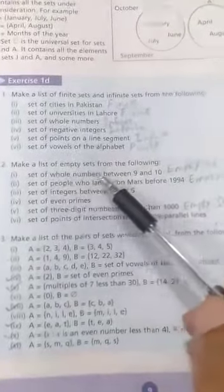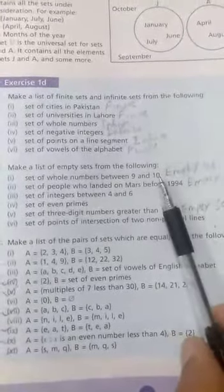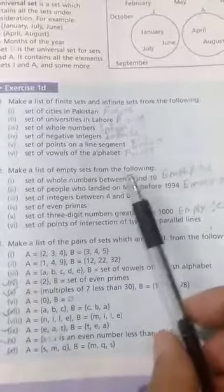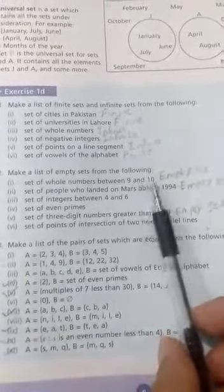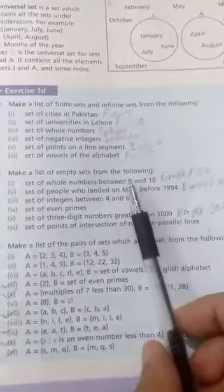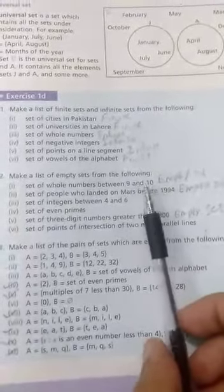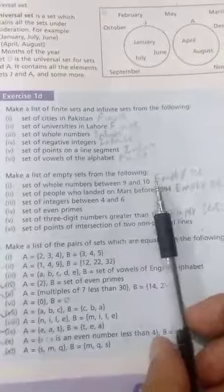Number 1: Set of whole numbers between 9 and 10. So, 9 and 10 are set of whole numbers. We have 9, then we have 10, then we have 11. We have nothing between 9 and 10, so this is an empty set.